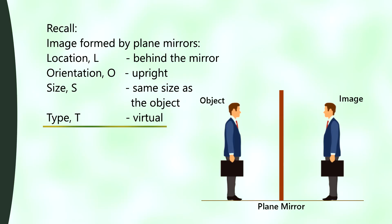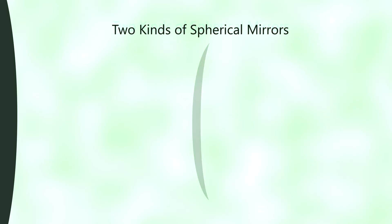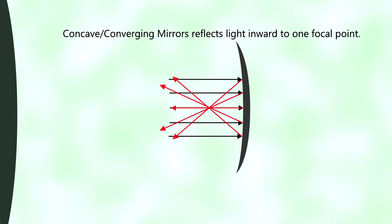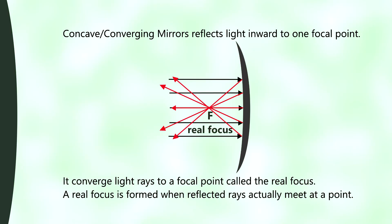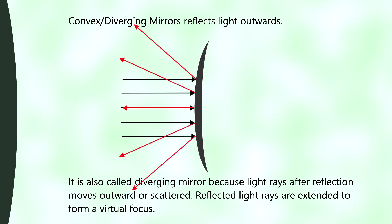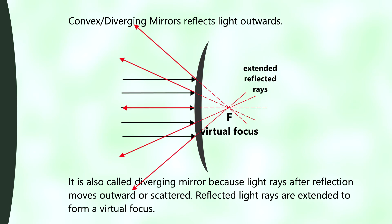Are the images produced by curved mirrors the same as those formed by plane mirrors? There are two kinds of curved mirrors or spherical mirrors: convex or diverging mirror, and concave or converging mirror. The concave mirror reflects light inward to one focal point — that is why it is also called converging mirror. It converts light rays to a focal point called real focus. On the other hand, a convex mirror reflects light outward. It is also called diverging mirror because light rays after reflection move outward or are scattered.